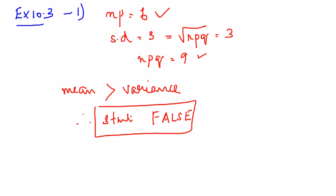Because the mean is 6 and the variance is 9, the mean is lesser than the variance, which is not the case in binomial distribution. Therefore the statement is false.